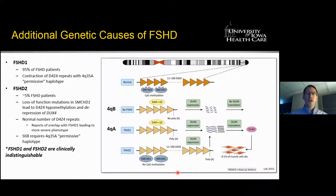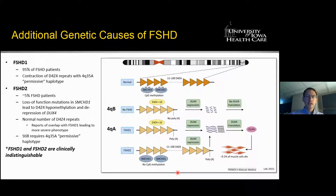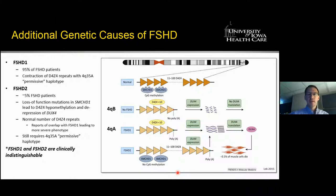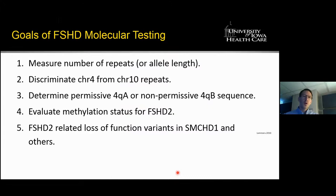About 95% of FSHD is due to these contractions of the D4Z4 repeat, referred to as FSHD type 1. About 5% of FSHD patients have mutations in one of the methylation-regulating genes, SMCHD1, which plays an important role in methylating the D4Z4 repeat. Mutations resulting in loss of function of SMCHD1 can result in hypomethylation and DUX4 expression, usually tied to some contraction of the D4Z4 repeat between 11 and 35 repeats. Clinically, FSHD type 1 and type 2 are indistinguishable.